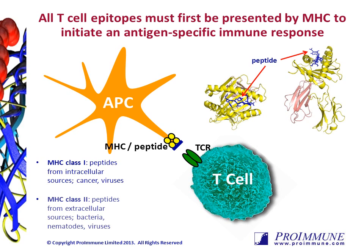Firstly, a brief introduction. Antigen-specific T cell responses are initiated when peptides from an antigen are displayed on the surface of major histocompatibility complexes, or MHC. Typically, proteins derived from inside the cell, such as those from virus infection or tumour antigens, are presented as short 9-12 amino acid-length peptides on MHC class 1 to CD8-positive cytotoxic T cells.